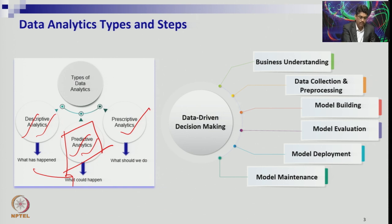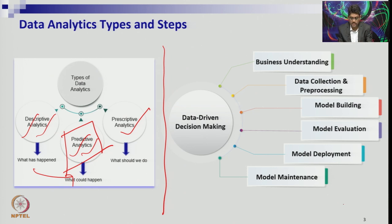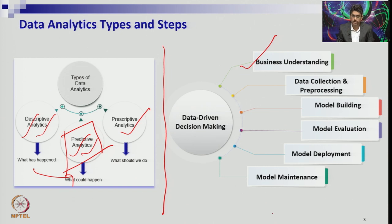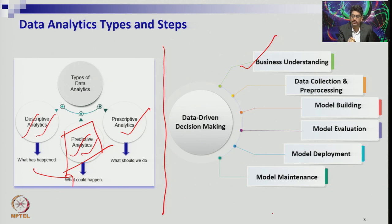This can be classified into five or six steps of data-driven decision making. The first step is to understand the business case and the business problem. As a data scientist or consulting team member, the better you understand the business problem and go deep into it, the better you can extract data, build models, and make forecasts. The next step is data collection and data preprocessing — understanding the sources of data, how reliable and authentic they are, and whether ethical practices have been maintained.